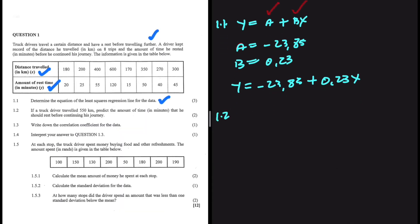Let's move forward and do 1.2. So 1.2, if a truck driver traveled 550 kilometers, predict the amount of time in minutes that he should rest before continuing his journey. So we are given an X, which is equals to 550, and we want the Y, which is the amount of time. So we are substituting 550 into this equation. If we do that, we're going to have minus 23.85 plus 0.23 multiplied by 550. I need to put that in my calculator. So minus 23.85 plus 0.23 multiplied by 550. I'm getting 102.65.